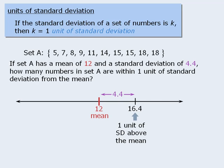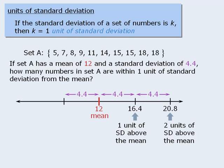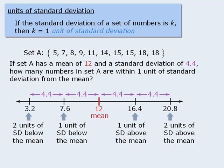Similarly, if we move another 4.4 units to the right, we can see that 20.8 is 2 units of standard deviation above the mean. Now if we move 4.4 units to the left of the mean, we get 7.6, and we can say that 7.6 is 1 unit of standard deviation below the mean. Similarly, if we move another 4.4 units to the left, we can see that 3.2 is 2 units of standard deviation below the mean.